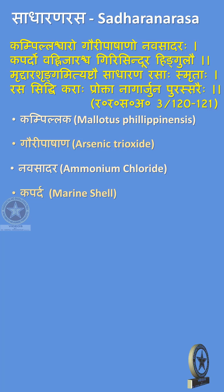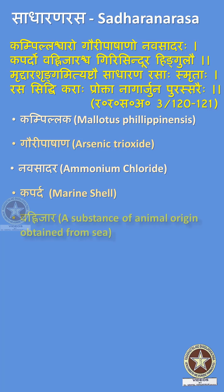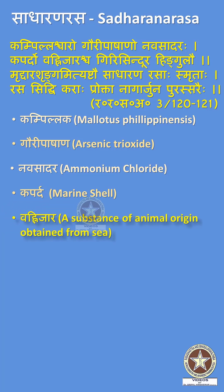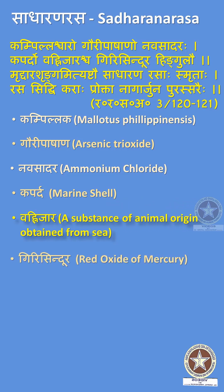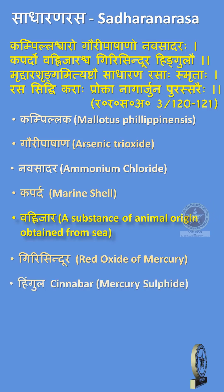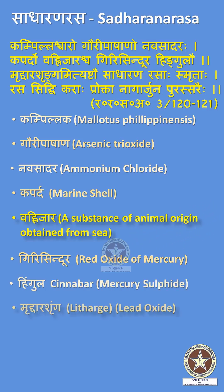The remaining Sathana Rasah drugs are: Kaparda (Marine Shell), Vanhijara (a substance of animal origin obtained from sea), Girisindura (Red Oxide of Mercury), Hingula (Cinnabar), and Mruddara Shrunga, also known as Litharge, that is Lead Oxide.